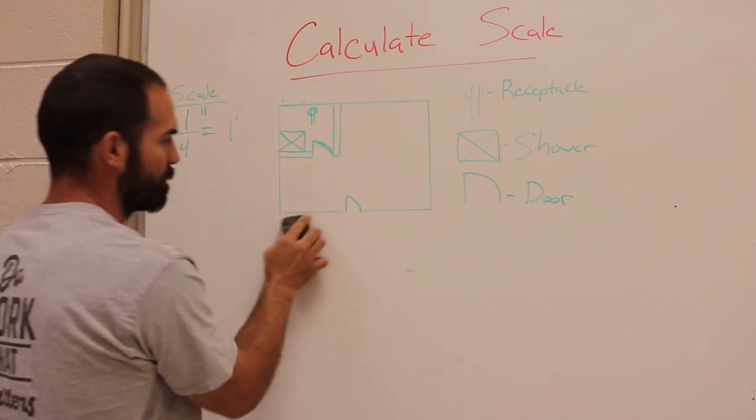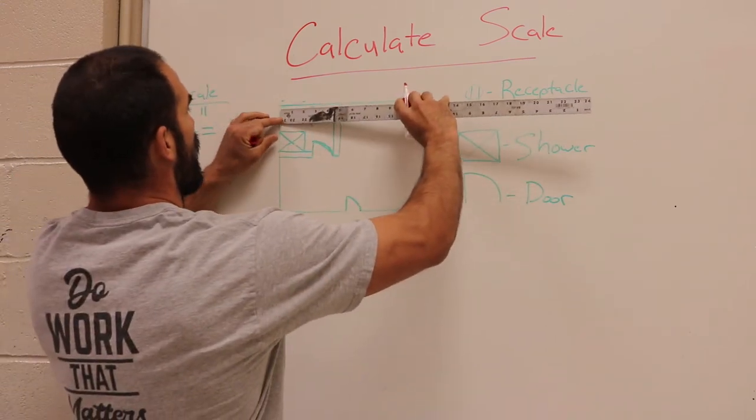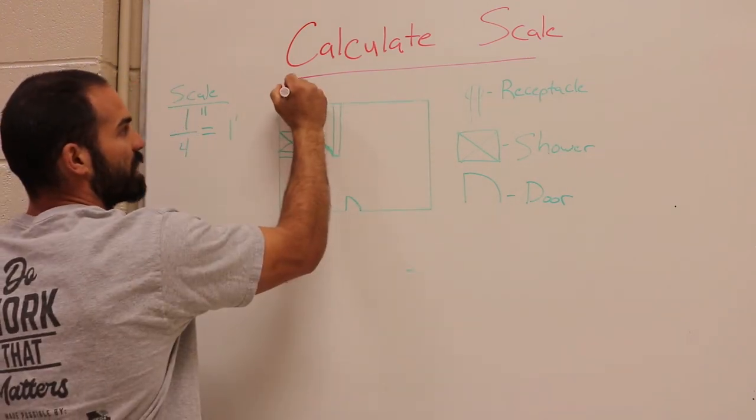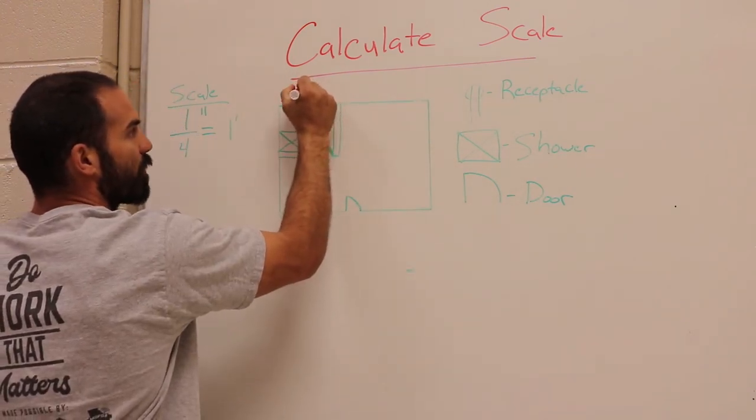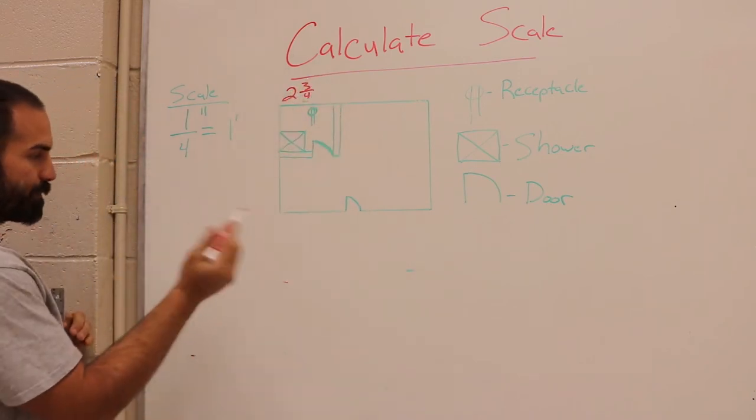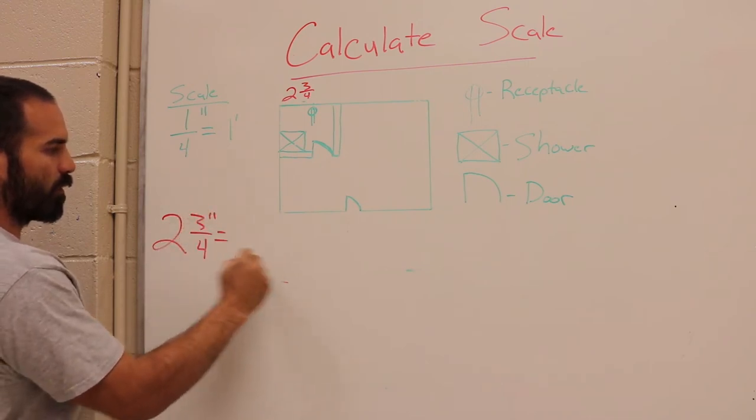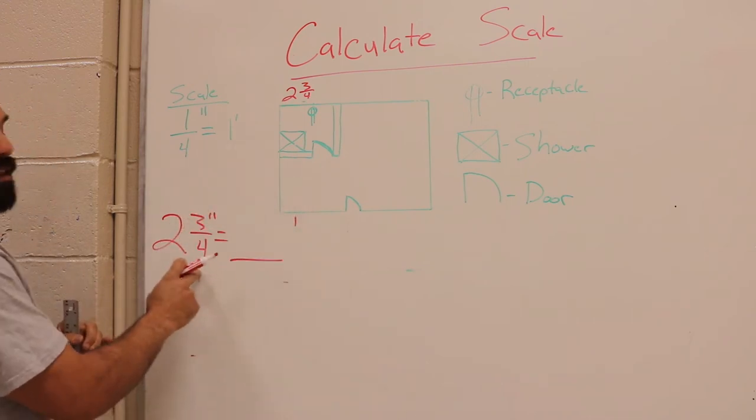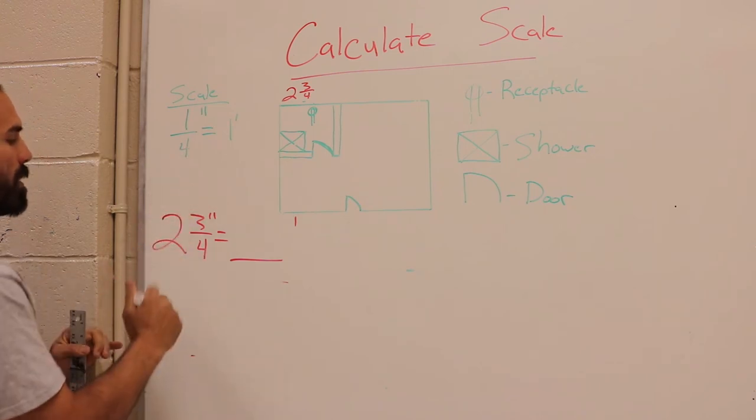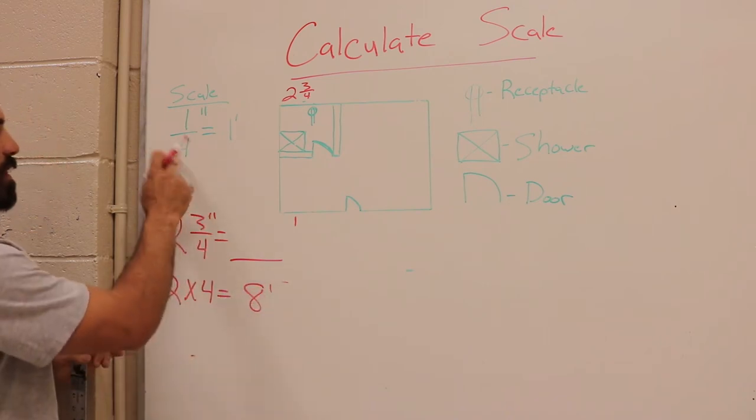All right, changing up trades here. I need to know where this receptacle falls. Let's say the measurement is 2 3/4 inches. To figure that out, I do the same as last time. I'll write 2 3/4 inches. What is that in feet? I take my 2, my whole number, and I multiply by my denominator: 2 times 4 equals 8 feet.